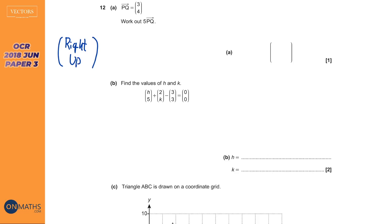So what this is saying is PQ goes three to the right and four up. What they want us to do is five lots of that. Focusing on the right component: three to the right done five times gives 15 to the right. Looking at the bottom: four up done five times — four times five is 20. Whenever you multiply a vector by a number, you just multiply the top and then multiply the bottom. Simple as that.